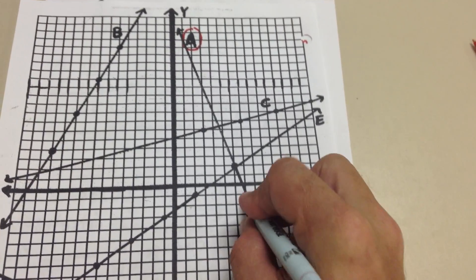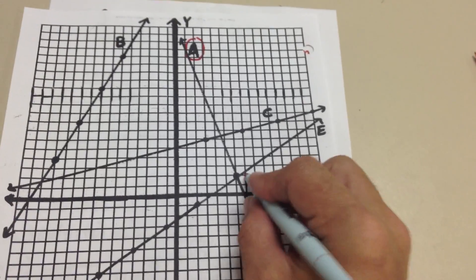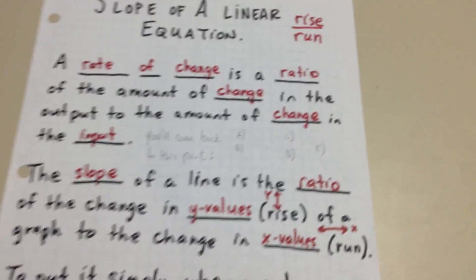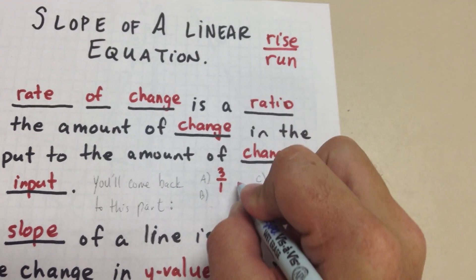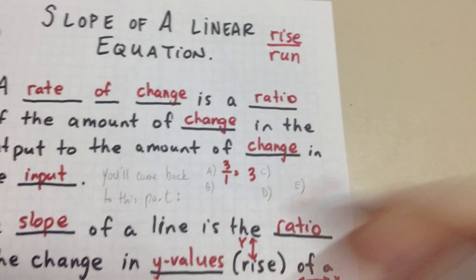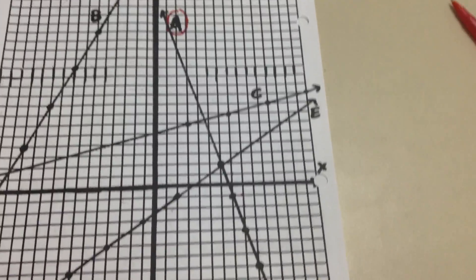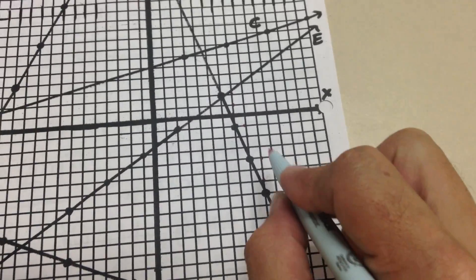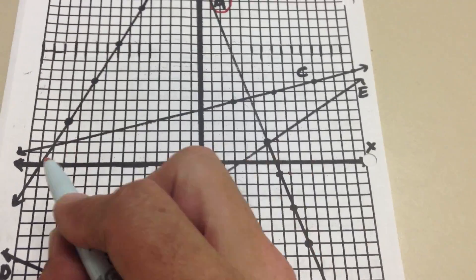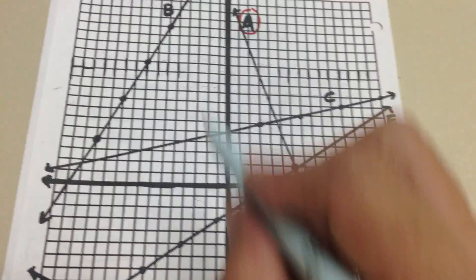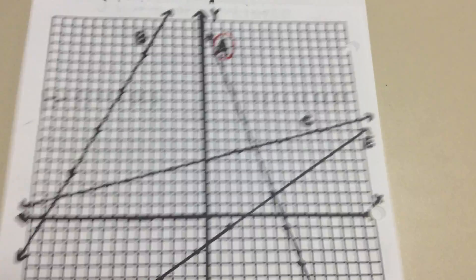So we look at our paper here. We're going to write three over one, which we can write as three. But there is something other about this. Since we went up and left, up and left, up and left, as you can see, it's getting closer to this negative side of the coordinate plane here. And so that makes it a negative slope.